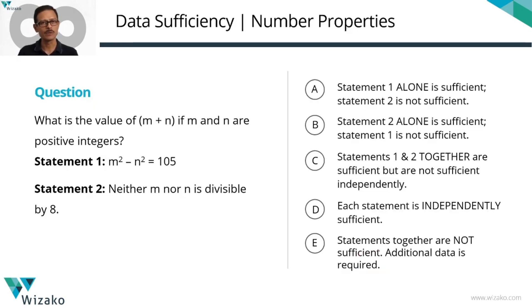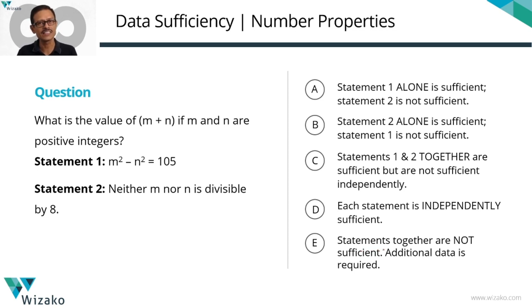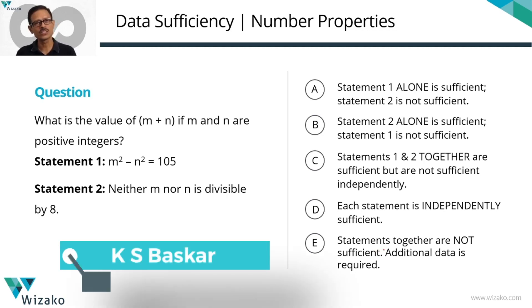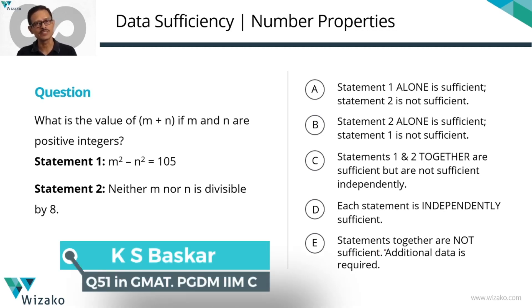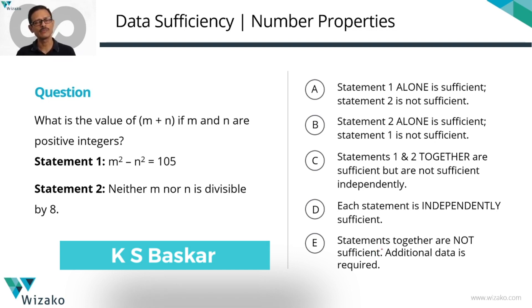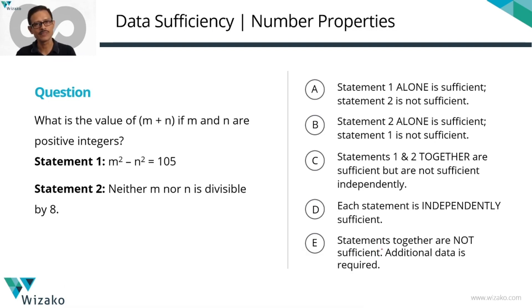This is a data sufficiency number properties question. A lot of these questions, I get quite a few comments — people asking, is there a way other than looking for a counter example? Sometimes the way to getting to the answer without a counter example might be very cumbersome and too time consuming. In a GMAT kind of environment, get accustomed to the idea of being able to find a counter example.